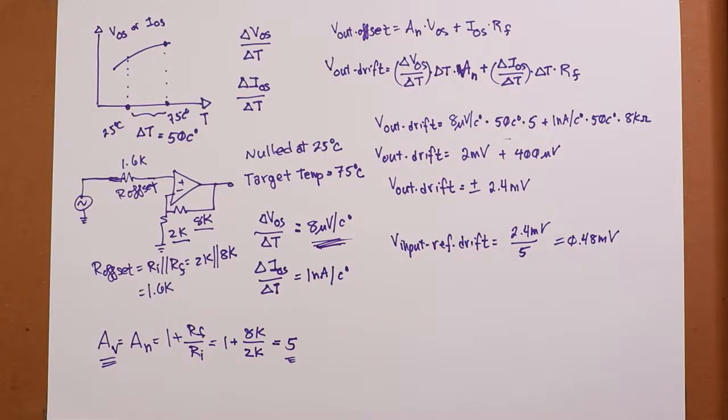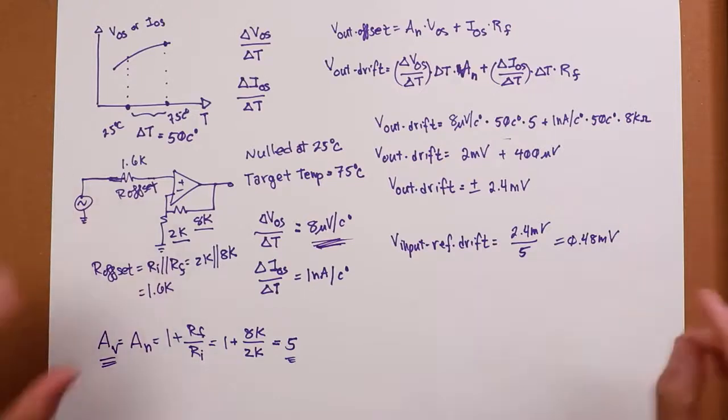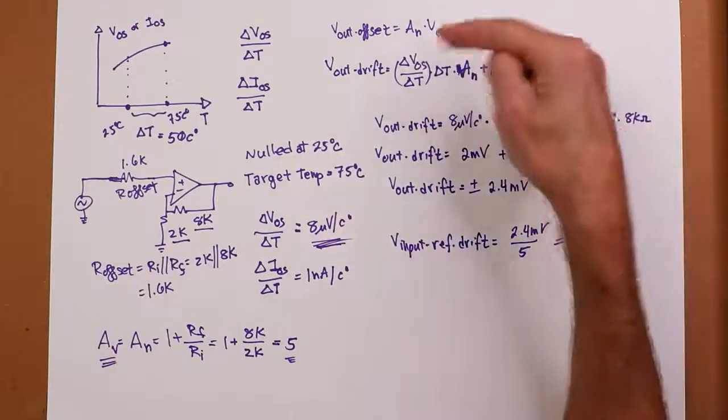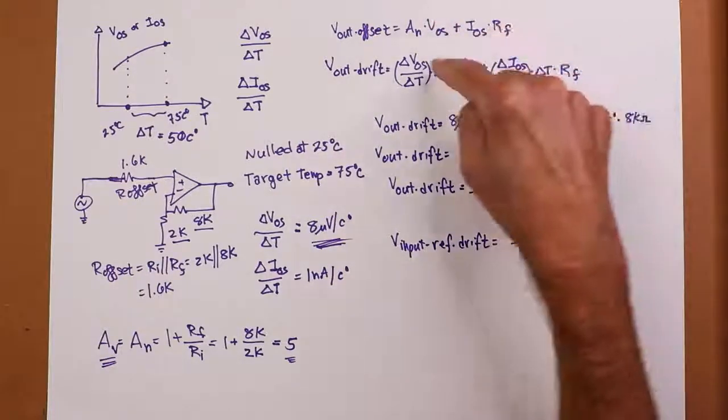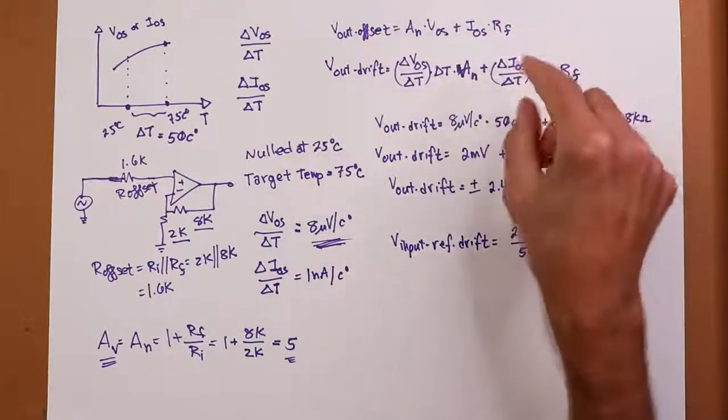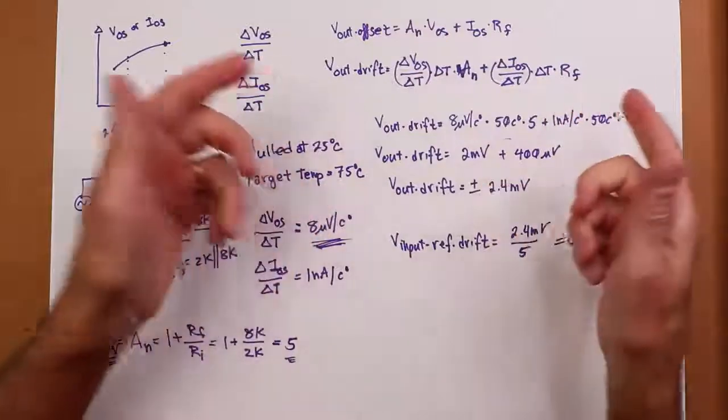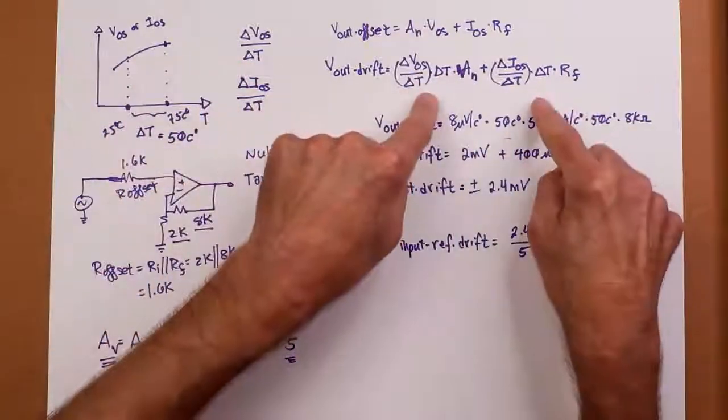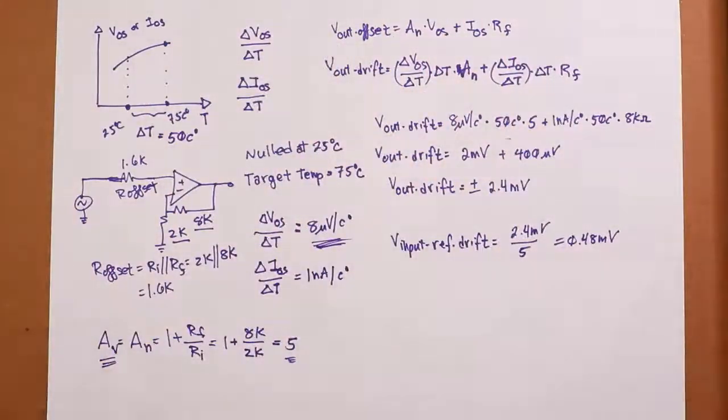Alright. Okay. So there we are. So offsets and drift kind of tied together. It's a very similar equation. We really just change the V_OS and the I_OS into the temperature dependent version of it, the slope, multiply it by the delta T and off we go. Okay. Alright. See you next time.